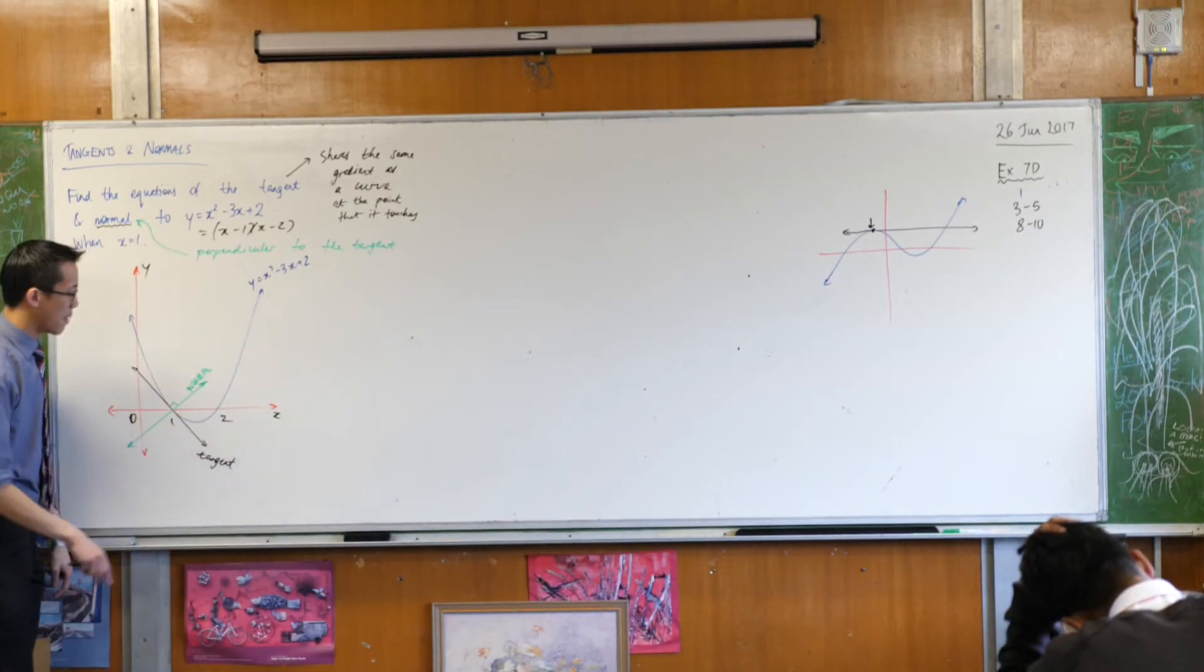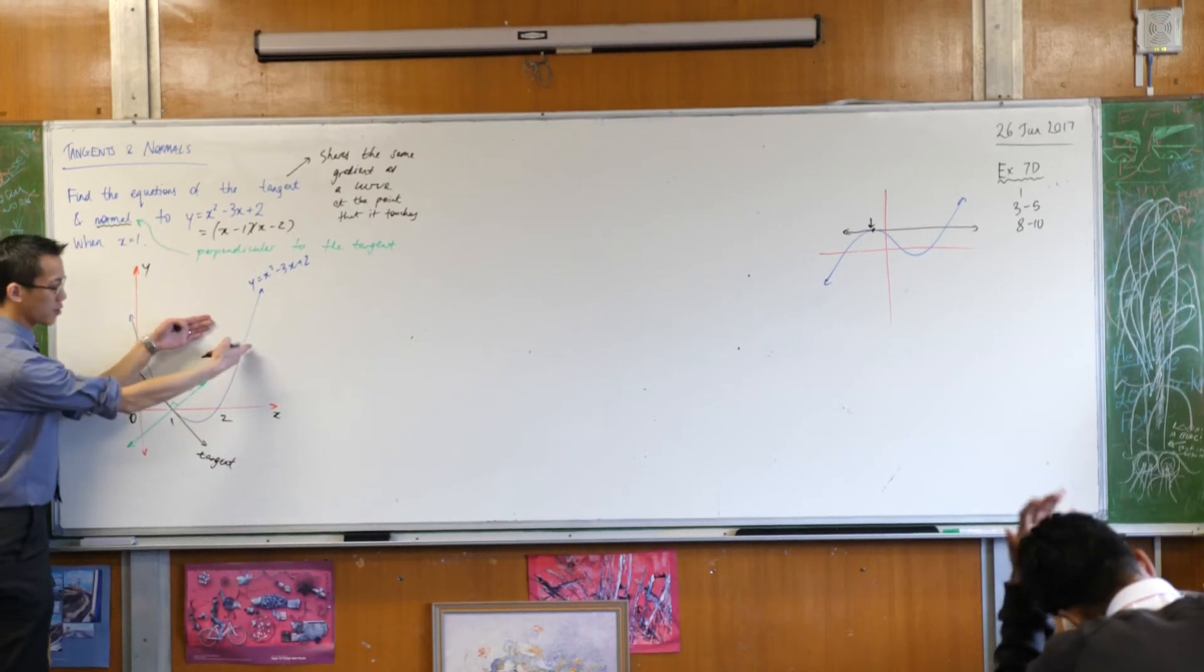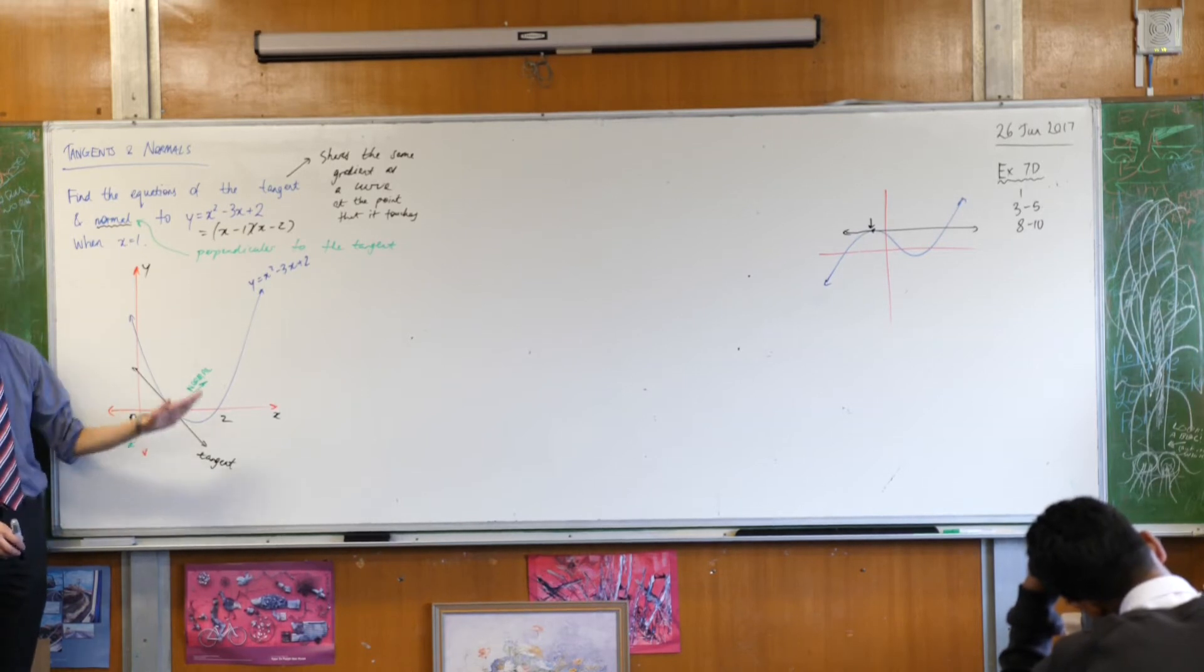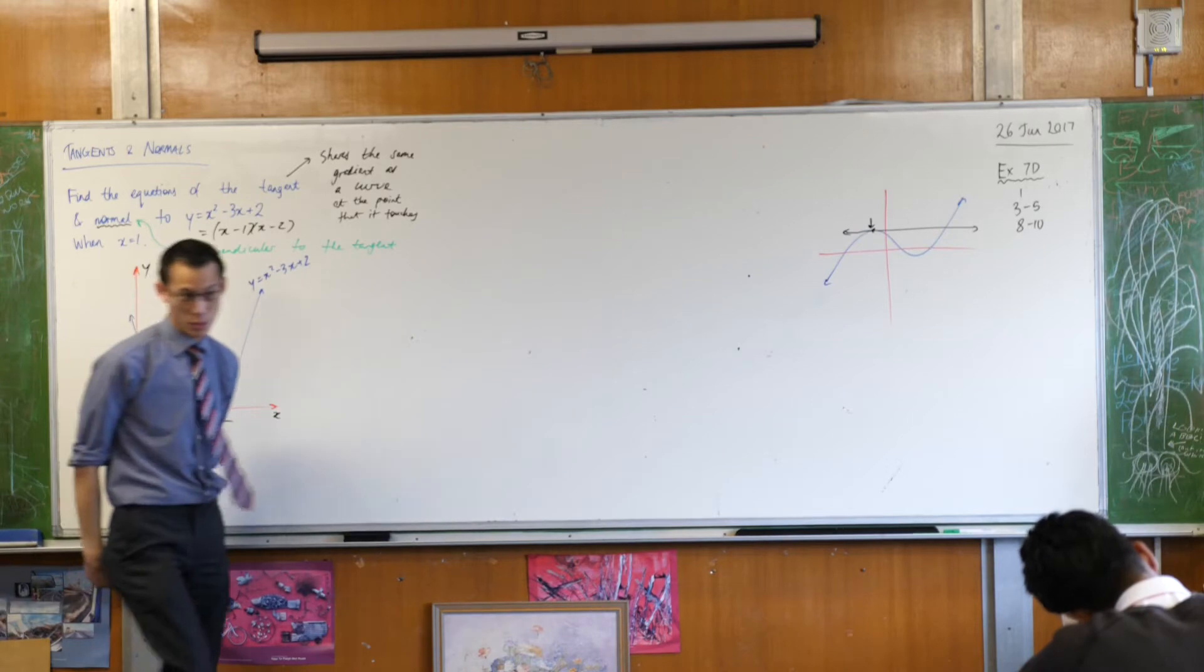Same deal with the normal, by the way. When this continues going, it's not going to be at right angles to this part of the curve. It's only at right angles down here at the particular spot that we specify. Alright, so now that we know what a tangent and a normal are, we can go ahead and find them because they're just straight lines like all the other ones that we've been dealing with.